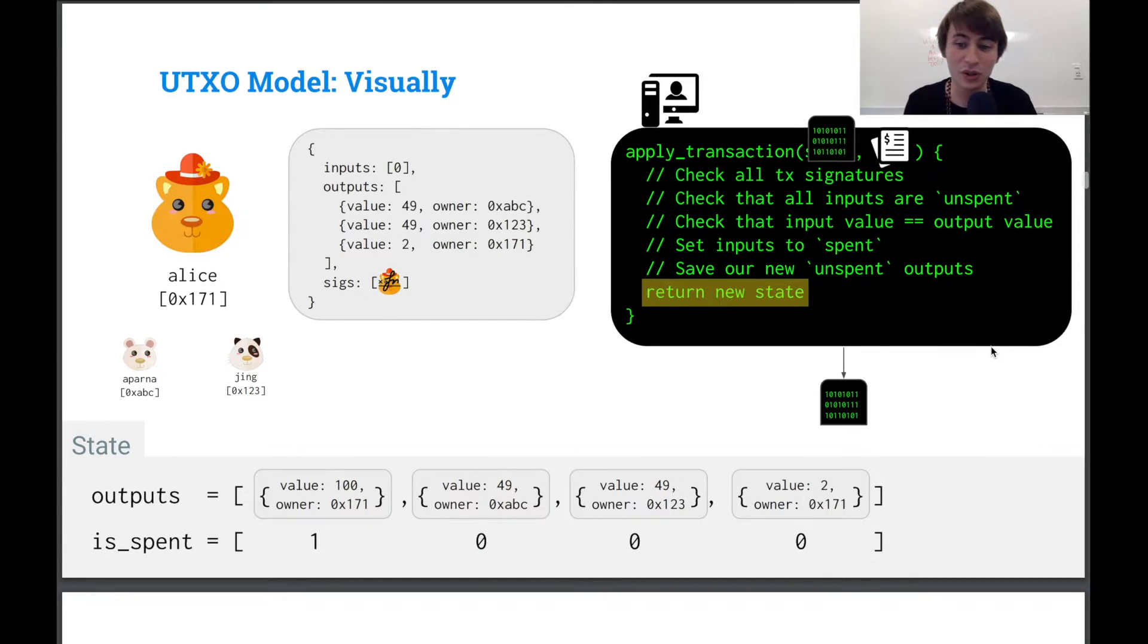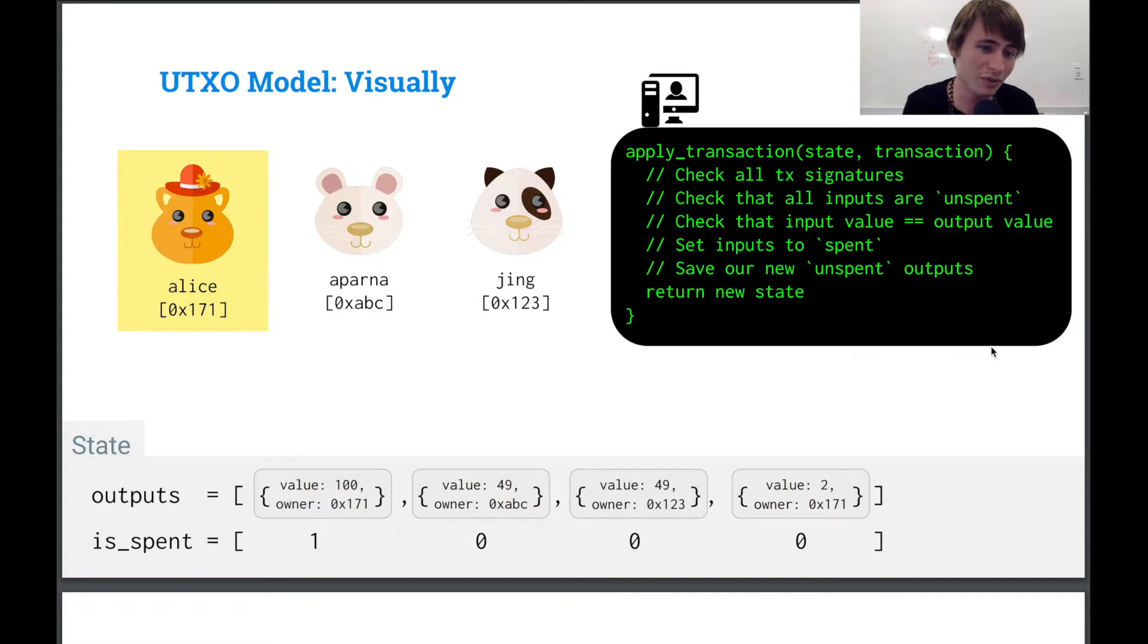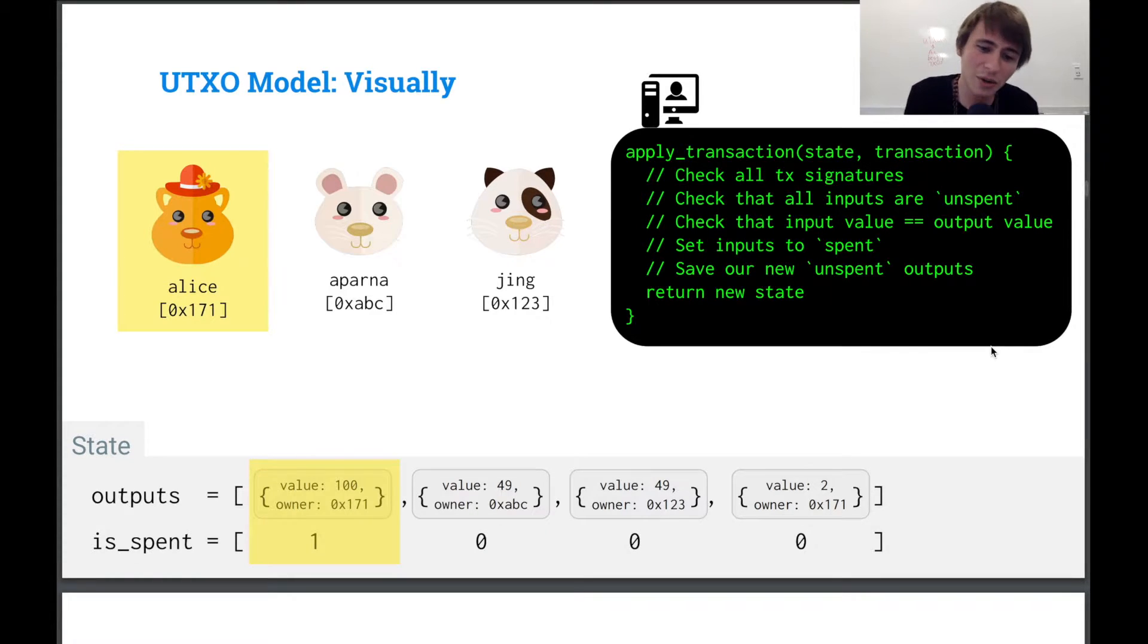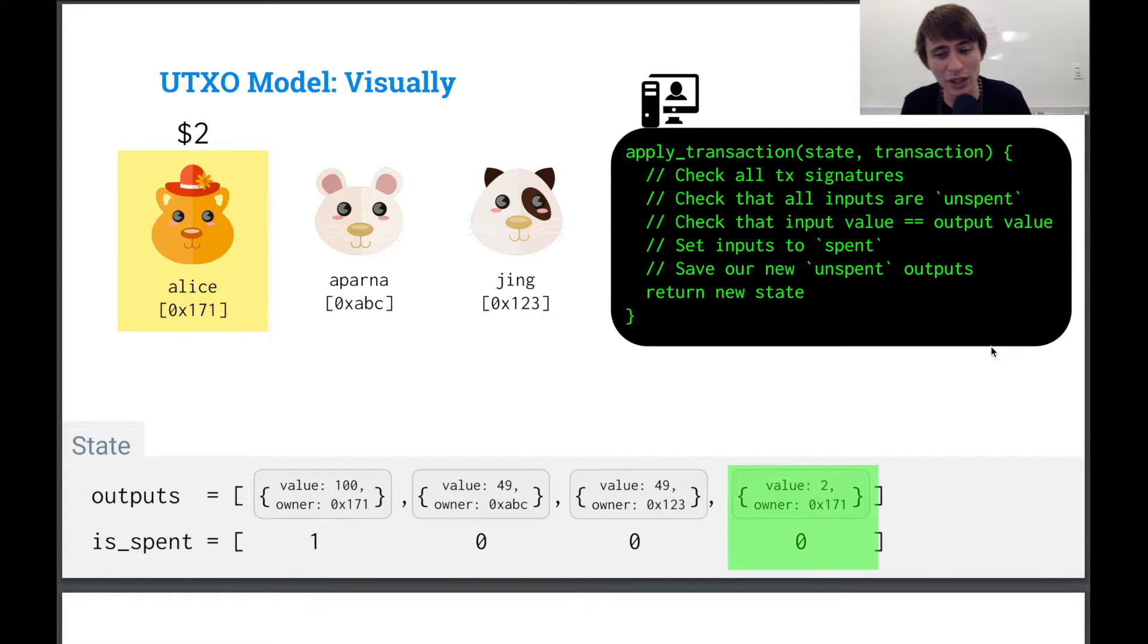So now we have, you know, return our new state. So if we wanted to look up the balances for each one of our users, what we'll do is we'll just iterate through all these TXOs and we'll say, okay, which one is spent? Here we go. We have the owner corresponds to Alice and it's two. So Alice has two.